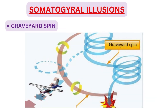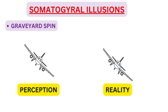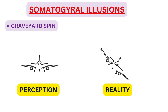The next is the graveyard spin — an illusion that can occur to a pilot who intentionally or unintentionally enters a spin. For example, a pilot who enters a spin to the left will initially have a sensation of spinning in the same direction. However, if the left spin continues, the pilot will have a sensation that the spin is progressively decreasing. At this point, if the pilot applies right rudder to stop the left spin, he will suddenly sense a spin in the opposite direction — to the right. If the pilot believes the airplane is spinning to the right, he will apply left rudder to counteract it, unknowingly re-entering the original left spin. This is what is called the graveyard spin.